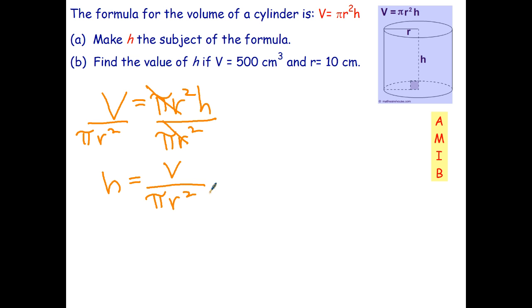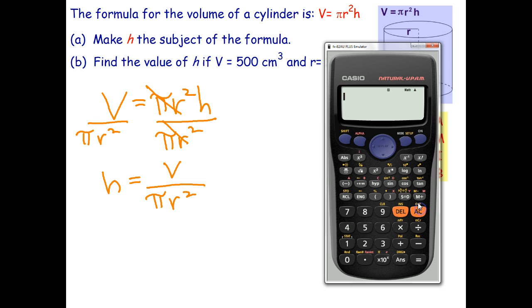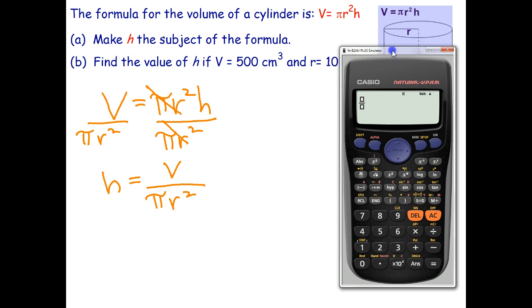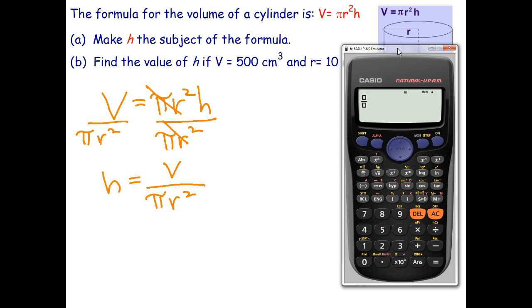Okay, now we can go ahead and work out the value of h. So let's bring up our calculator and I need my fraction button. The volume is 500 cubic centimeters and I've lost track of what my r is. So the volume is 500 over π, so I need my π button, multiplied by radius is 10 squared. Quick check.